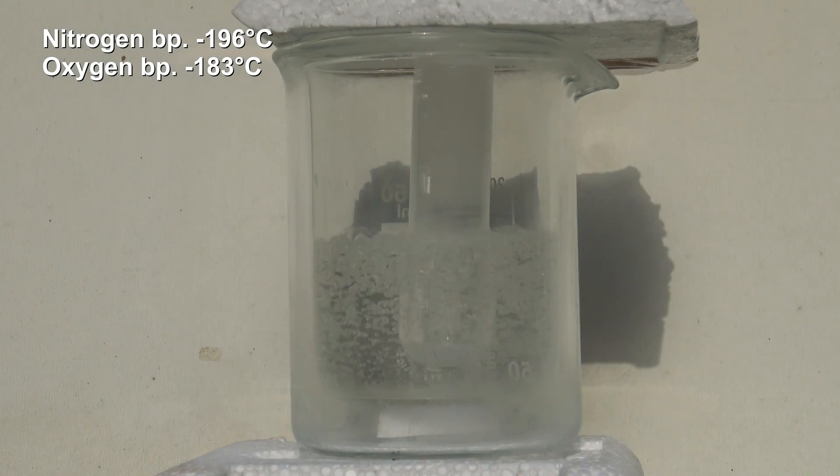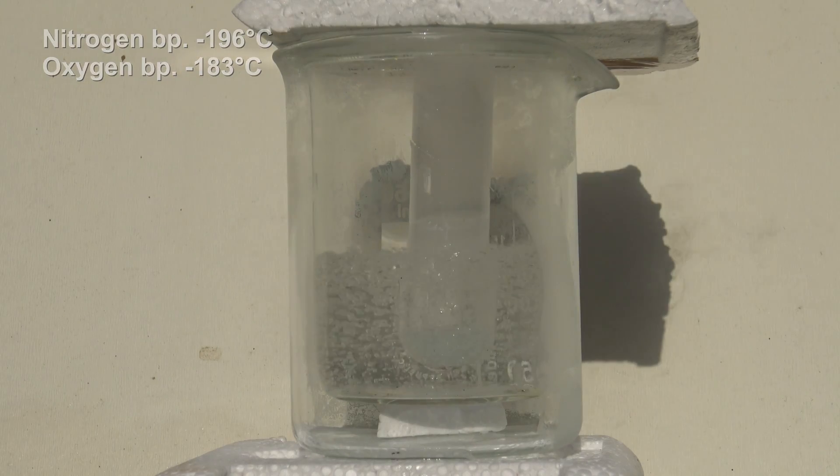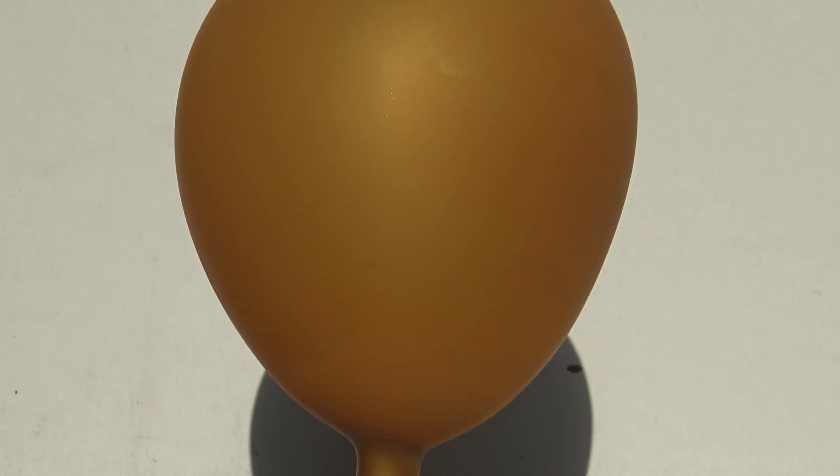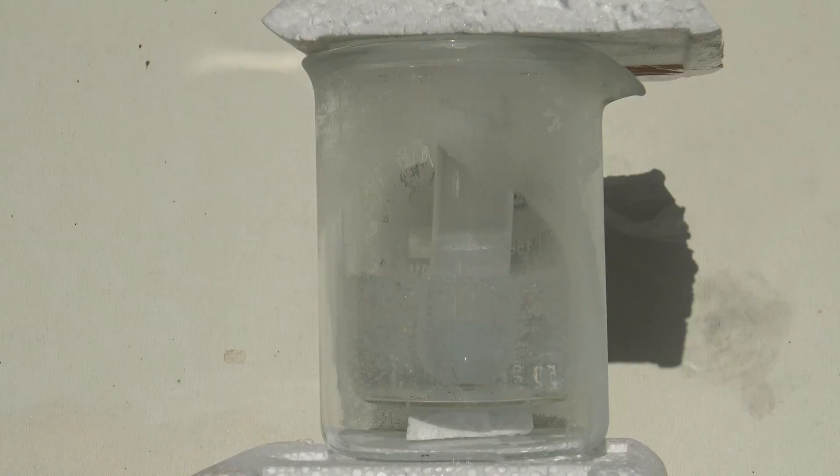To remove ice from the surface of the beakers, it was covered with some ethanol. Liquid oxygen has a pale blue color, which can be seen better when the prepared oxygen is dried before the condensation, as it can be seen here.